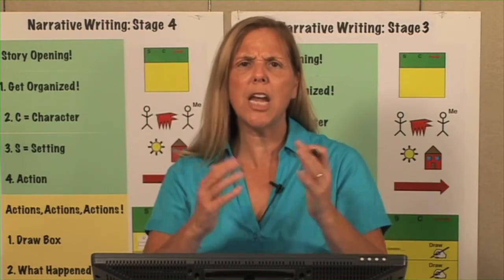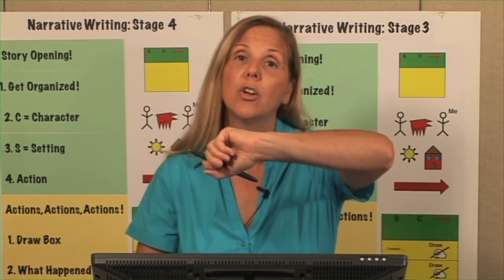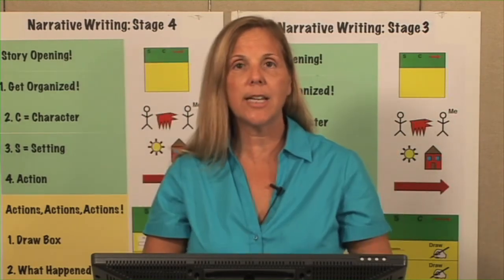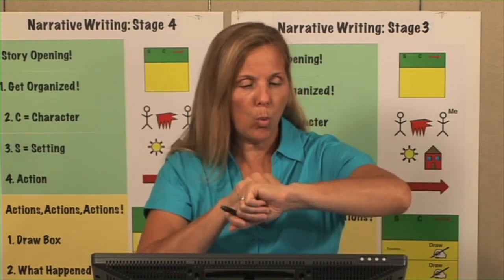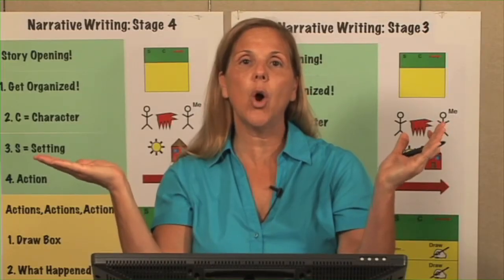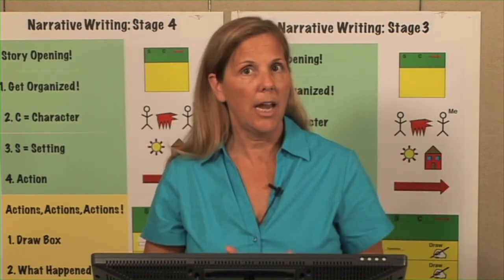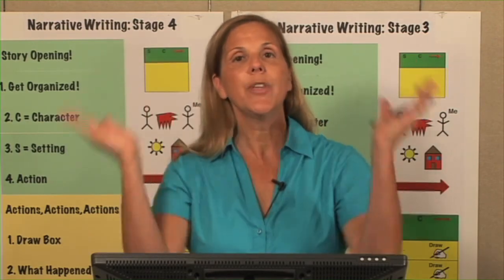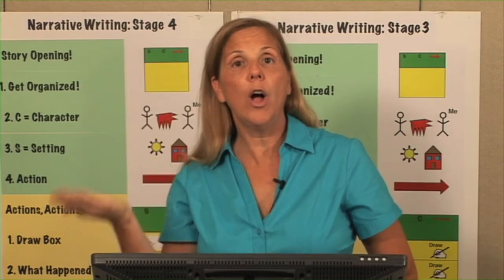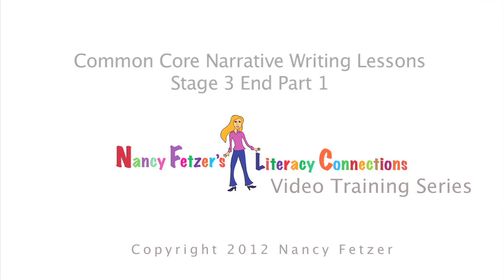So now we have our SC Arrow. Say to students: 'What does that mean? That's our secret formula.' The S is for setting. Look at your wrist like you're looking at a watch — setting tells us time and place, or when and where. The C is for character — who's in our story? A person, an animal, or I am. That way you can write an imaginative narrative or a personal narrative with these same exact steps. And then the arrow is action — what is the character doing?